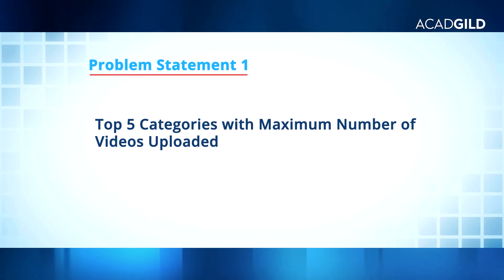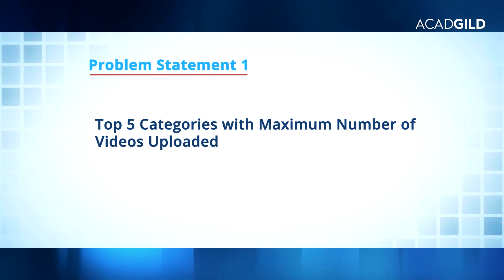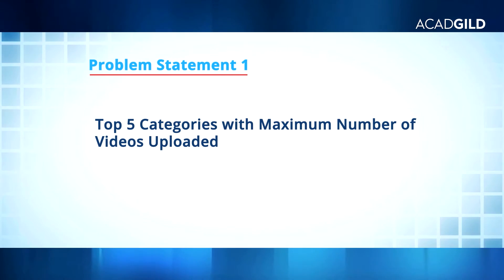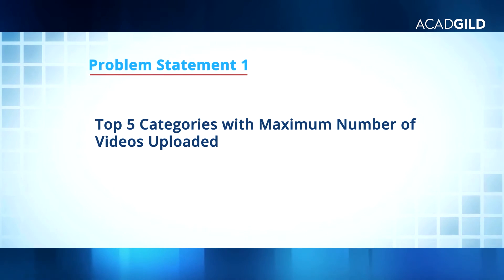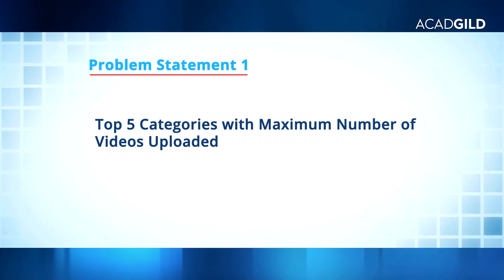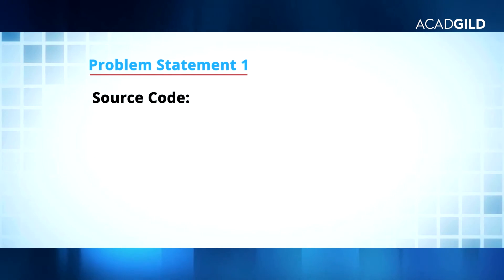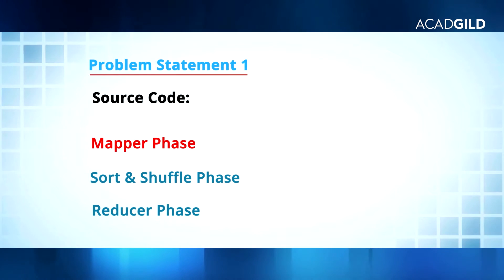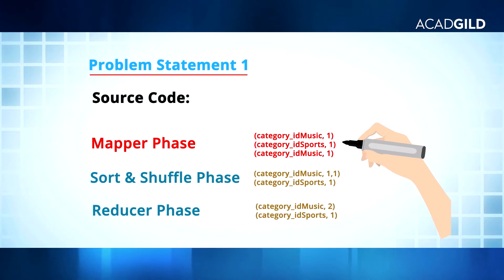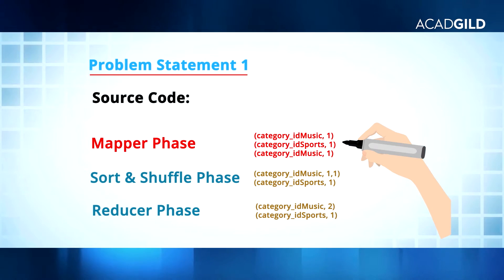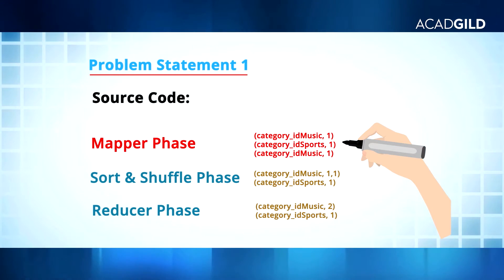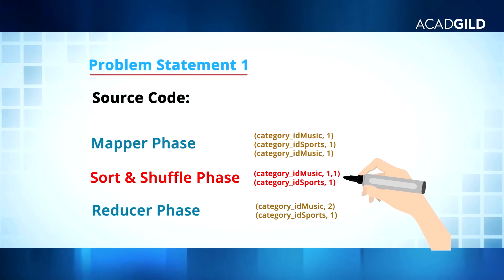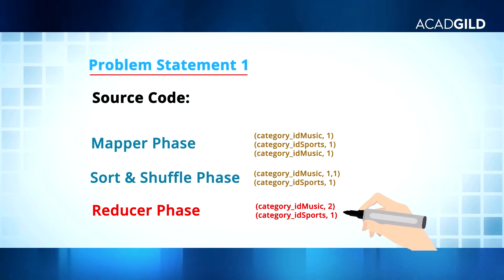Problem Statement 1: Here we will collect information about the top 5 categories of videos for which the maximum number of videos have been uploaded. From the mapper we need to get the video category as key and the value as 1, which will be passed to the shuffle and sort phase and further sent to the reducer phase where aggregation of these values will be performed.